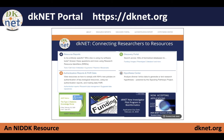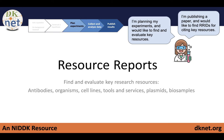The portal itself — when you come to the landing page — has these various areas right there on the front page grouped into the various categories. We'll start our tour with the resource reports, which are really meant to help find and evaluate key research resources. For example, if you're publishing a paper, you might be requested to provide a research resource identifier to cite key resources, and this section of the portal assists researchers in doing that.